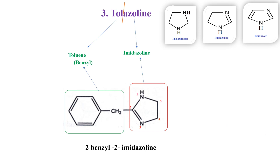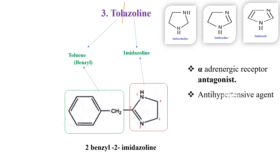Tolazoline is an alpha adrenergic receptor antagonist and it is used as an antihypertensive agent and as a vasodilator.